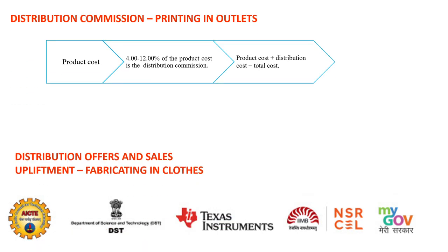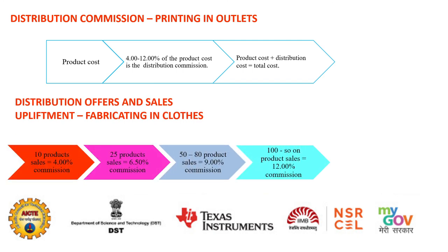Distribution commission applies to the industry prototype and the printing-in-outlets prototype, but not for the household prototype. The product referenced here is cloth printing — with gradual increase in sales, more offers are provided for final profit and commission decreases according to increased product usage. Discounts are available on bulk purchases.